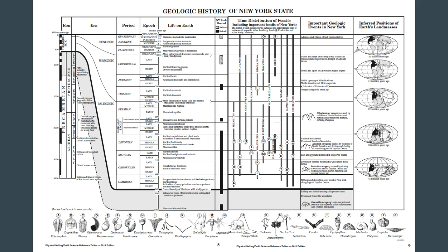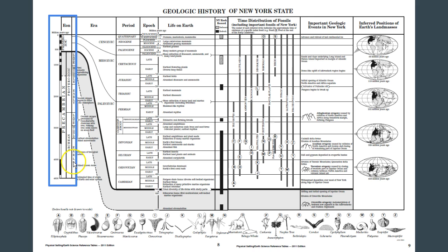Let's break down our times. We're going to start with eon, because an eon is the largest unit here. This will be found right here on the left-hand side. Eons are broken down into the Precambrian and the Phanerozoic eon. Then you can see that Precambrian is further broken down to the Proterozoic and the Archean, and each of those are broken down to either early, middle, or late.